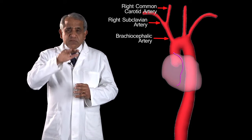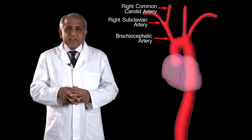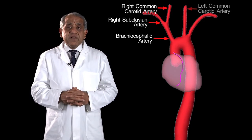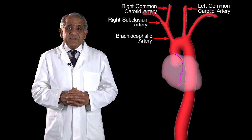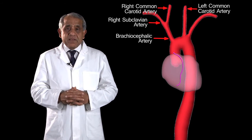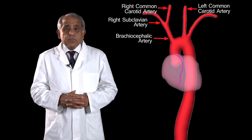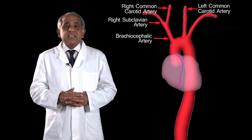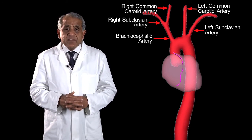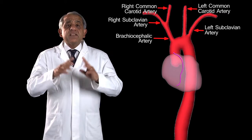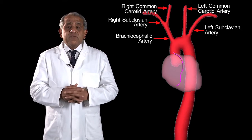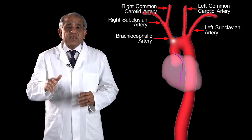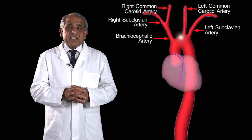The next branch arises from the very summit of the aortic arch and is the left common carotid artery. The final branch of the aortic arch is the left subclavian artery. So these are the three branches of the aortic arch, and all of them arise from the convexity of the aortic arch.